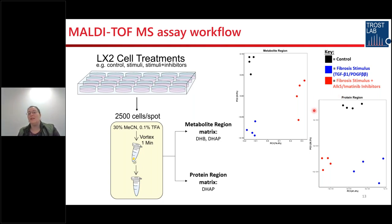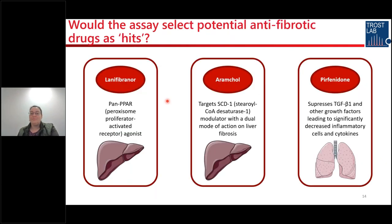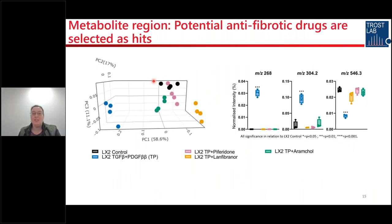So we looked at inhibitors that are currently in clinical trials: lanifibranor, a pan-PPAR agonist; aramchol, which targets stearoyl-CoA desaturase 1; and we looked at potentially redeploying pirfenidone, which is currently used clinically to treat lung fibrosis. When you look at these, you can see clear differences and clear clustering between TGF-beta/PDGF-treated cells and the different inhibitor conditions, with distinct potential biomarkers visible.